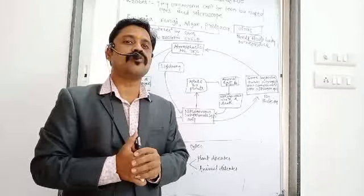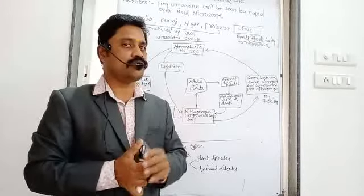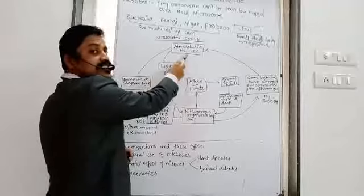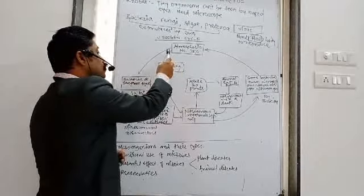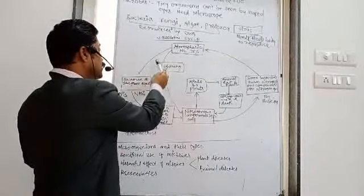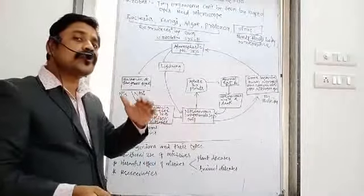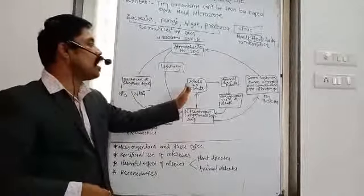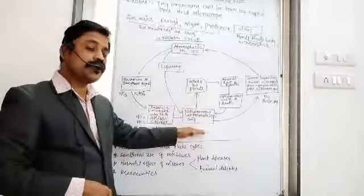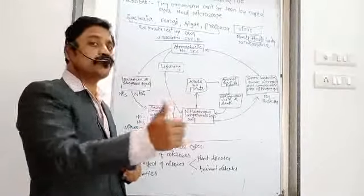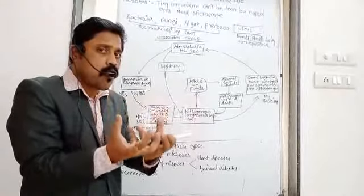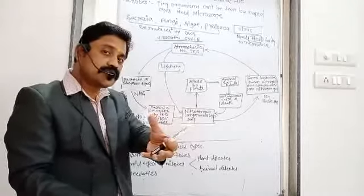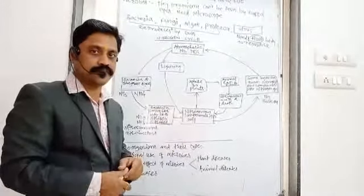Some bacteria, fungi, and algae are involved in biological fixation of nitrogen — that is why this is called biological fixation. Atmospheric nitrogen (78% in the environment) is converted into nitrogenous compounds by microorganisms. Nitrogen cannot be absorbed directly by plants, so it has to be converted into salts that dissolve in water. These dissolved minerals are then absorbed by plants along with water for protein synthesis.